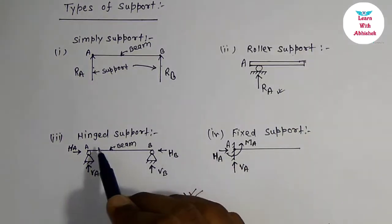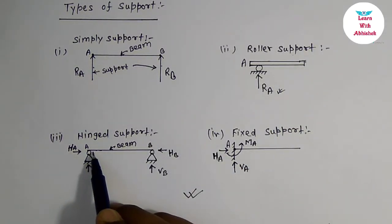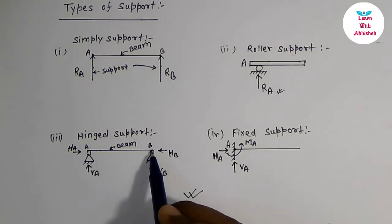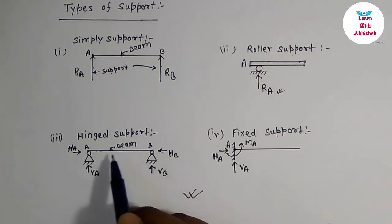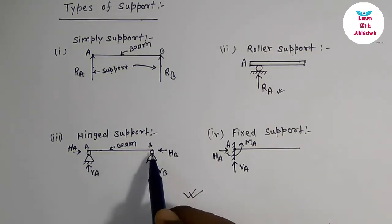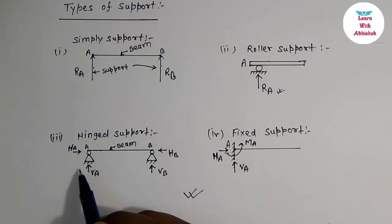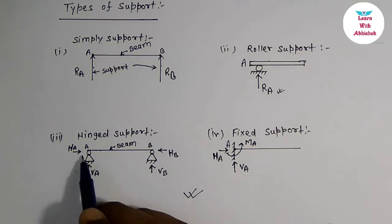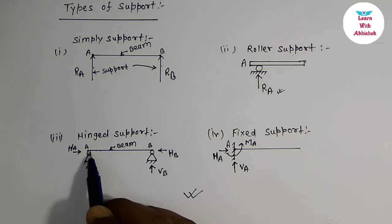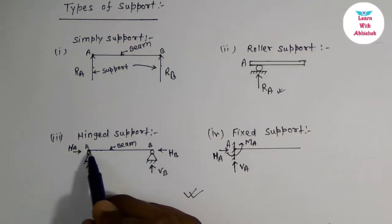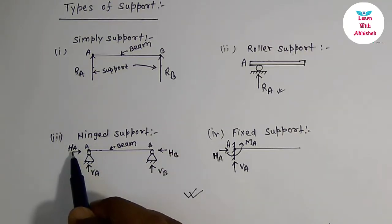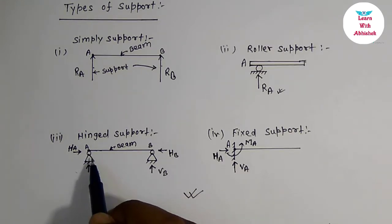Now we will discuss hinge support. Here we see that a beam AB is hinged at point A and at point B. This is the beam which is hinged at point A and at point B, and this is the symbol for hinge support. In the case of hinge support, there will be two reaction components at each hinge point. At point A, which is the hinge point, there will be two reaction components: one is along the horizontal direction, one is along the vertical direction.